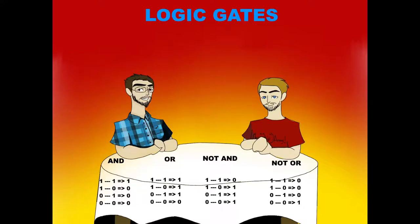Hello everybody and welcome back to Special Codes. I'm Taylor and I'm Nathan. Last episode we talked a little bit about binary and what computers do, and this episode I would like to get into what actually happens inside the physical machine when it sees binary — as in when the computer sees a one, what does it do, and a zero, what does it do.